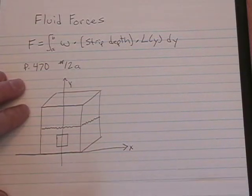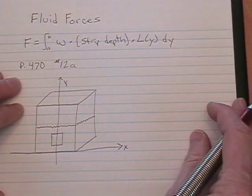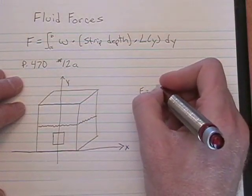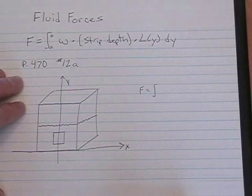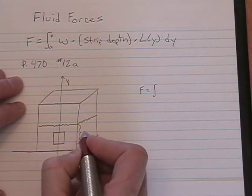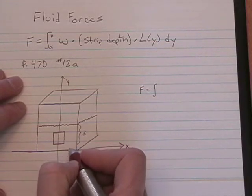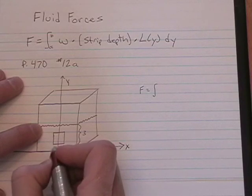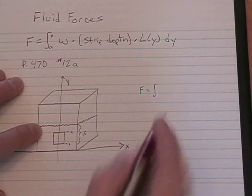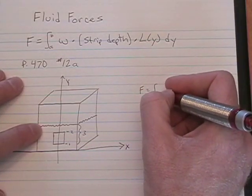So let's go ahead and set up our integral. For our problem, F equals the integral. Now, let's get some numbers in here. The depth of the water is three feet. The plate is one foot up and one foot high. So this is a Y value of one and a Y value of two. So we're going to integrate from one to two.